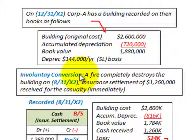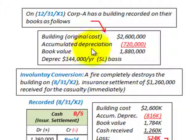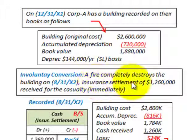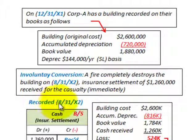Here's where we have our involuntary conversion. A fire completely destroys the building on 8/31/X2, the following year — 8 months after the end of year X1. The insurance settlement received for the casualty loss was $1,260,000, and we're going to treat it as received immediately as of the date of the fire, 8/31/X2.